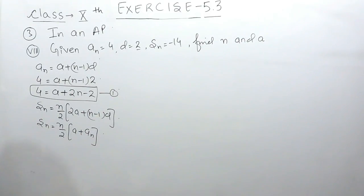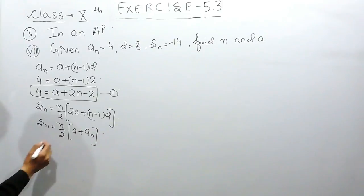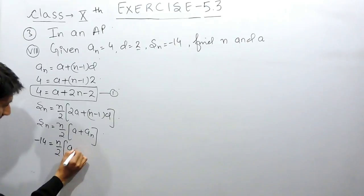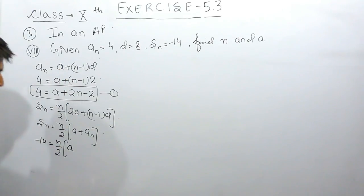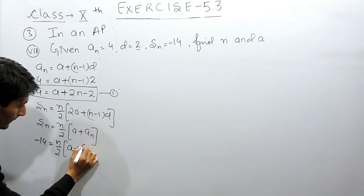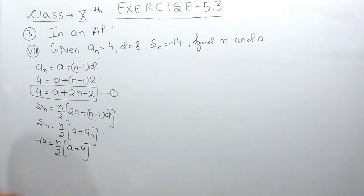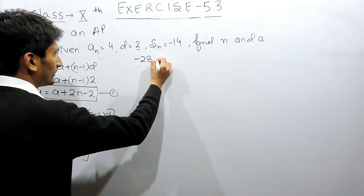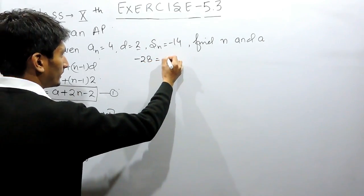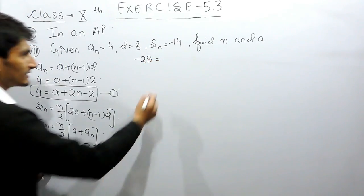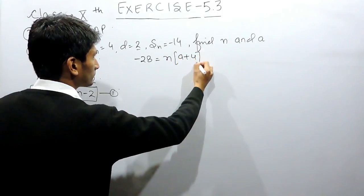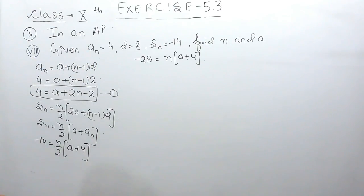We will use this second formula here. The sum of n terms is given as minus 14, so minus 14 equals n by 2 times a plus 4, since the last term is 4. Cross multiplying, this becomes minus 28 equals n multiplied by a plus 4. This is our second equation.